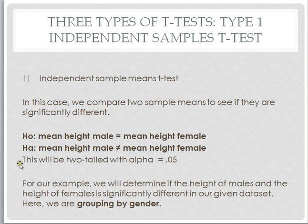This is going to be a two-tailed test, and we're going to use an alpha of .05. In this particular example, we're going to be grouping by gender, and we're going to be comparing two independent sample means. Let's see how this looks in SPSS.